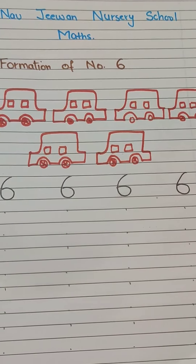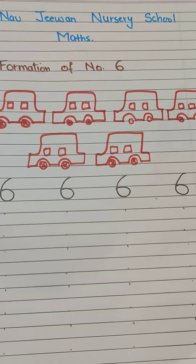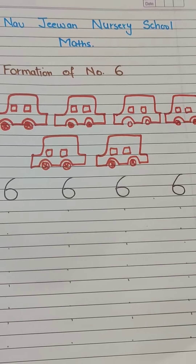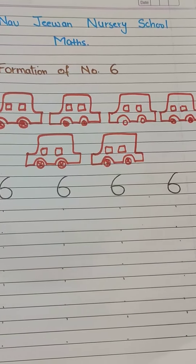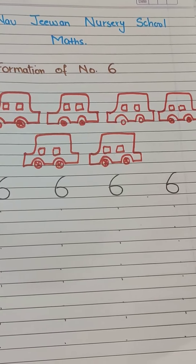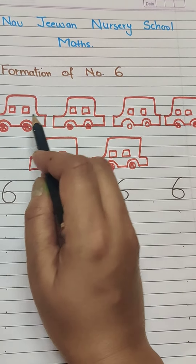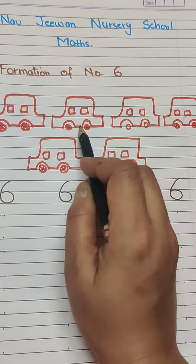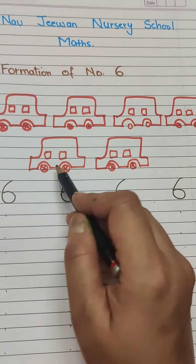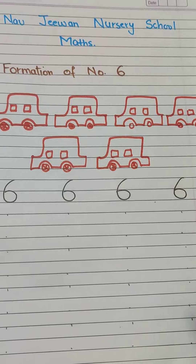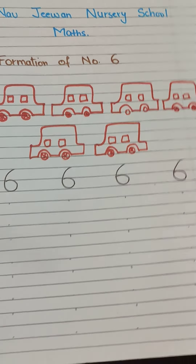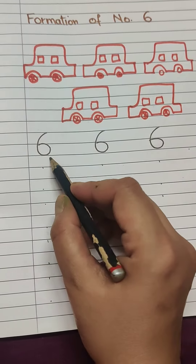So before we start the formation, let's count the pictures over here. Some cars are here. So how many cars are here? Let's count them: 1, 2, 3, 4, 5, 6. So 6 cars are here. And here is number 6.